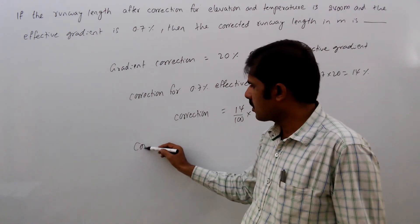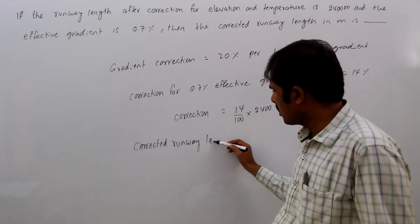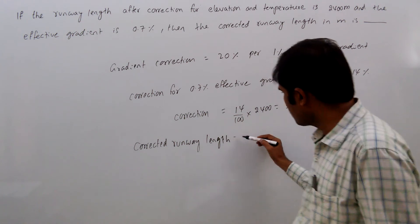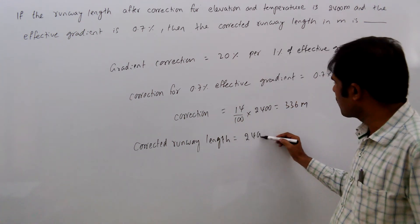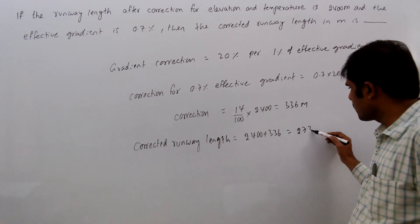So, corrected runway length equals 2400 plus 336, that equals 2736 meters.